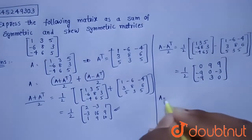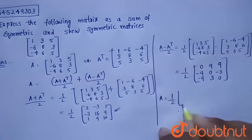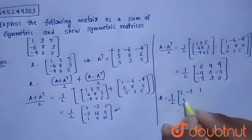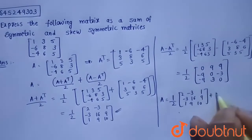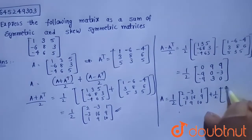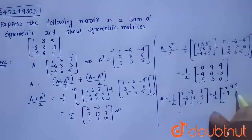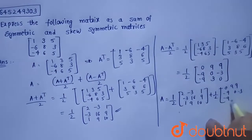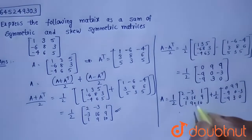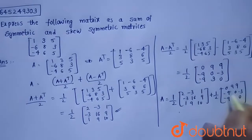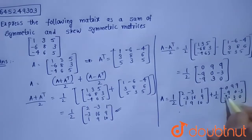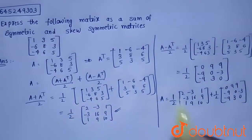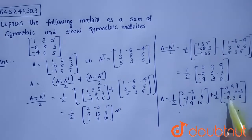So now A can be expressed as (1/2)[2, -3, 1; -3, 16, 9; 1, 9, 10] plus (1/2)[0, 9, 9; -9, 0, -3; -9, 3, 0]. If you observe, the first is the symmetric matrix where A^T = A, and the second is the skew-symmetric matrix where A^T = -A. So A is expressed as a sum of symmetric and skew-symmetric matrices.